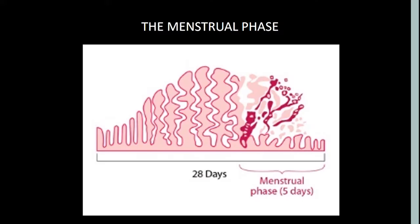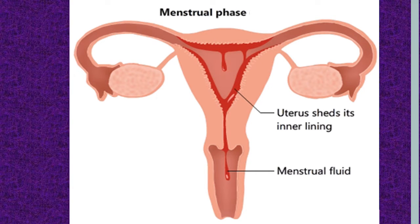The menstrual phase starts from the first day of menstrual cycle to the fifth day of menstrual cycle. This is the period when the woman experiences menstruation. What happens is that the functional and the compact layer along with the tubular glands are sloughed off in the form of bloody tissue and flow from the uterus through the vagina. The vaginal bleeding usually lasts for three to five days on average, and sometimes it may be up to seven days. This vaginal bleeding occurs when the functional and compact layers of the endometrium are shed off along with the unfertilized egg from the uterus through the vagina.